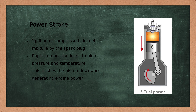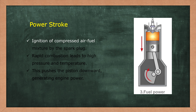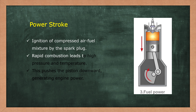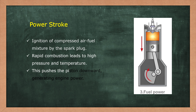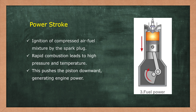Now we will see the power stroke. The compressed air-fuel mixture inside the cylinder is provided with a spark, which leads to the initiation of combustion. The combustion, high pressure, and temperature lead to rapid expansion of the gases inside the cylinder, which in turn pushes the piston downwards. As the pushing force on the piston is produced by the burning of fuel, this stroke is also called the power stroke.